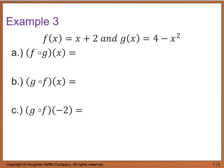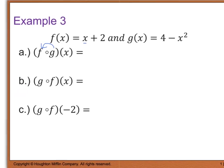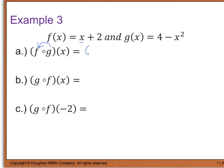Example 3 gives us two functions f(x) and g(x). Part A says to find f of g of x. So we're going to take this function g and plug it in to f. Wherever I have an x in my f function, I'm going to plug in 4 minus x squared, which is my g equation. So I have 4 minus x squared plus 2. When we simplify, 4 plus 2 gives us 6, so I have negative x squared plus 6. And that's f of g of x.